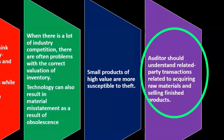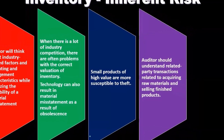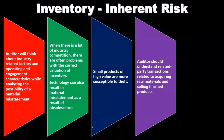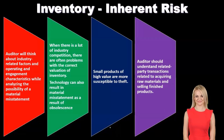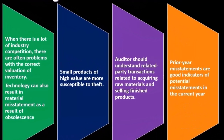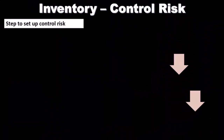Auditors should understand related party transactions related to acquiring raw materials and selling finished products. Related party transactions — those with related entities such as subsidiaries — are suspect because there aren't the same market forces at play. We need to look into them, assess whether they're material, and determine if they've been recorded properly. Prior year misstatements are also good indicators of potential misstatements in the current year. If there was a problem last year, we're more skeptical this year, which increases the inherent risk factors.